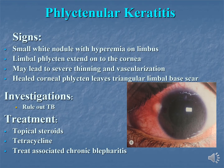As far as signs are concerned, initially there is a small white nodule with hyperemia on the limbus. The limbal phlycten may extend onto the cornea, then lead to severe thinning and vascularization. When healing occurs, it leaves behind a triangular limbal-based scar. In our country, we must always rule out tuberculosis.